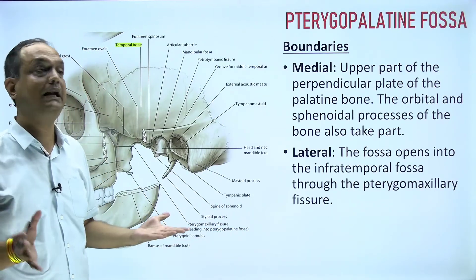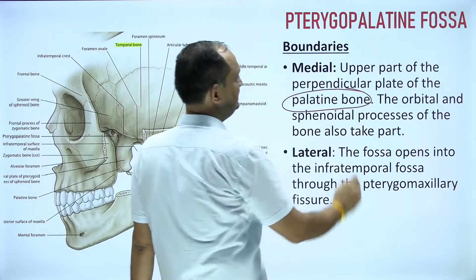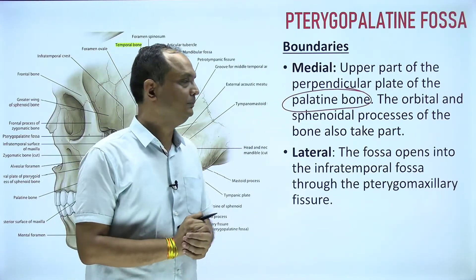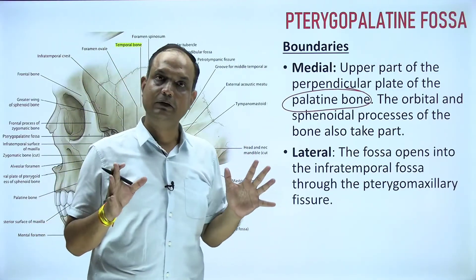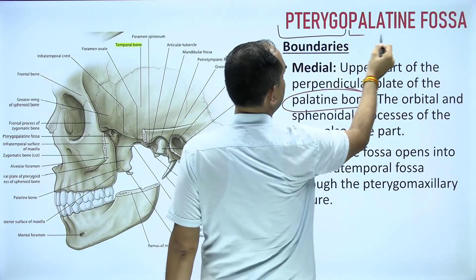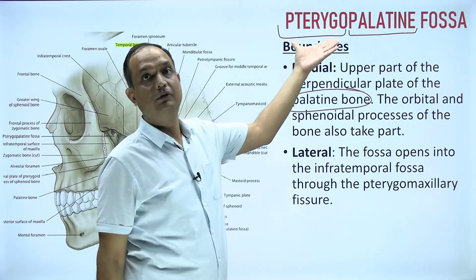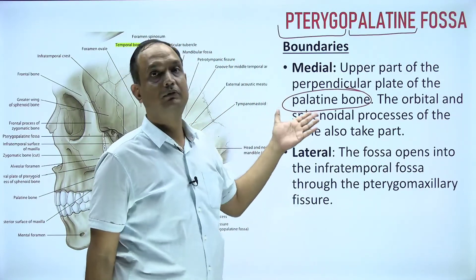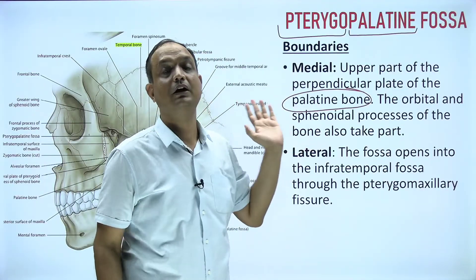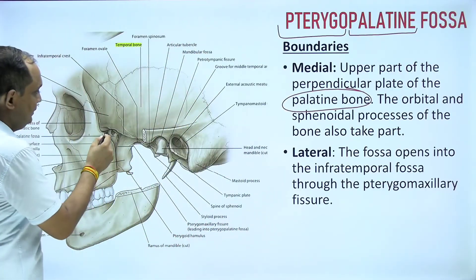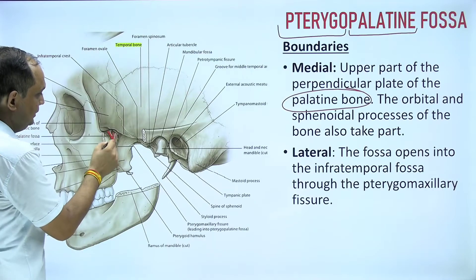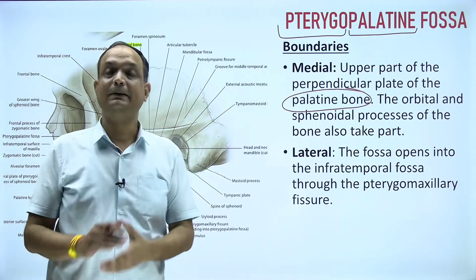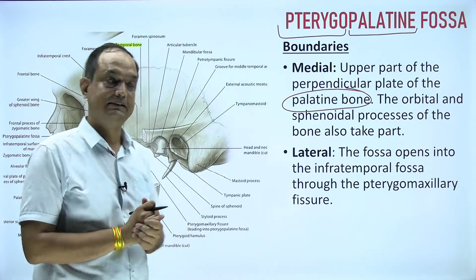The medial boundary is very important — it is contributed by the palatine bone, specifically the perpendicular plate of the palatine bone. The orbital and sphenoidal processes of the bone also take part. Note that the word 'pterygopalatine' itself tells you it is bounded by the pterygoid process of the sphenoid and the palatine bone. The medial wall separates this fossa from the nose — if you puncture the perpendicular plate, you enter the nasal cavity.